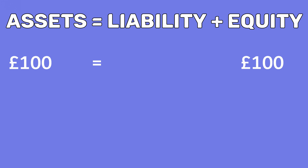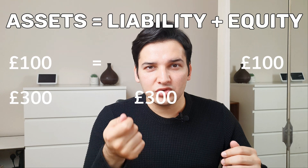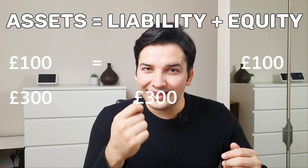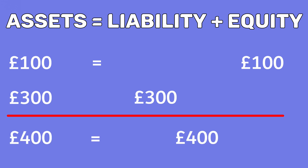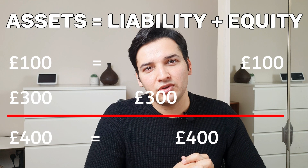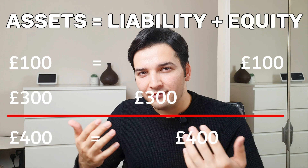One week later, the business wants to purchase a computer for business purposes, and buys it for £300. The business has not bought the computer with cash — it's bought it on a three-month loan. So the loan has increased by £300, and that's how the asset was funded. The accounting equation still balances: it's got £400 worth of assets and £400 worth of sources of funds, which are either the liabilities or the equity. That's the purpose of the accounting equation — it tells you how your assets have been funded.